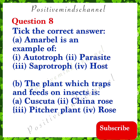Question 8: Check the correct answer. (a) Amarbel is an example of: autotroph, parasite, saprotroph, or host — the answer is parasite. (b) The plant which traps and feeds on insects — the answer is pitcher plant.